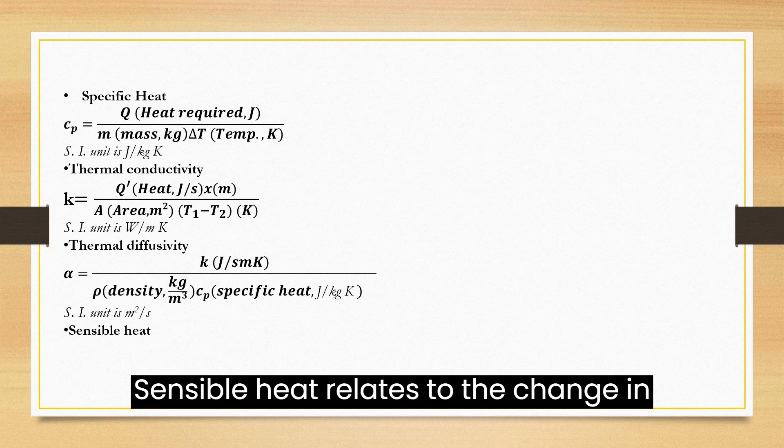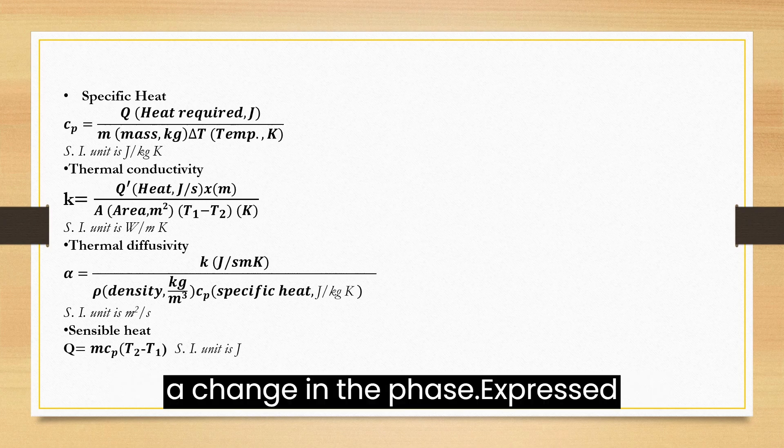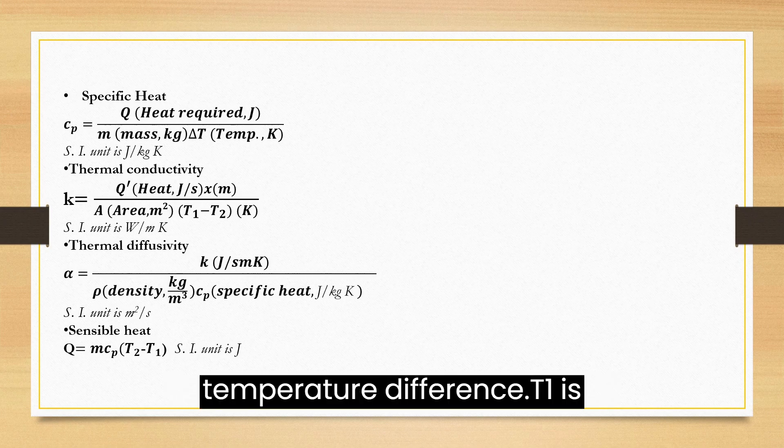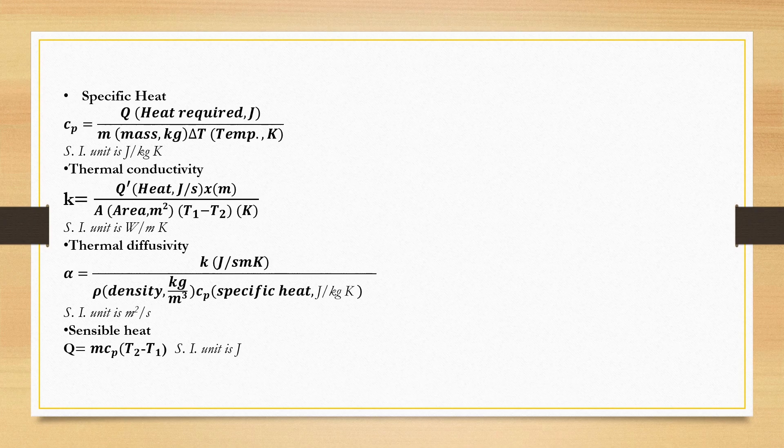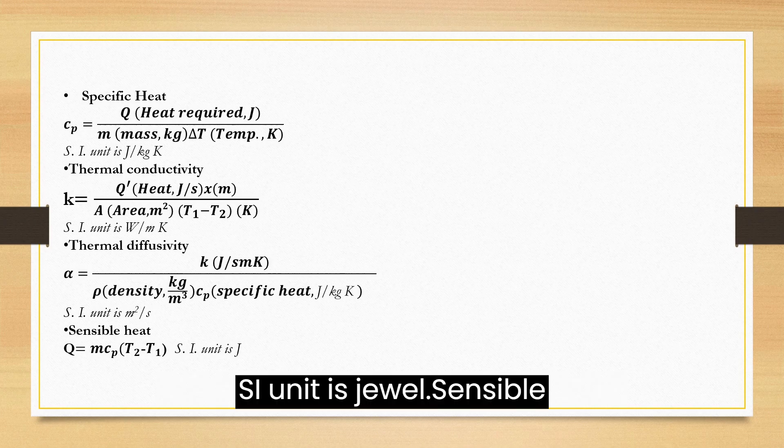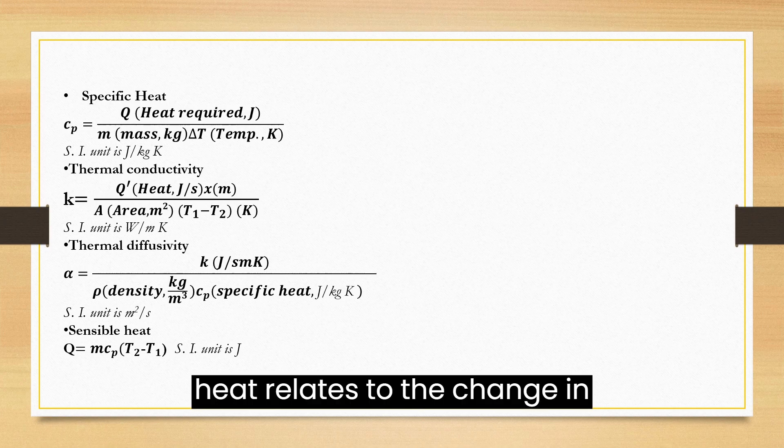Sensible heat relates to the change in temperature of an object or gas without a change in phase. It is expressed as mass times specific heat times temperature difference, where T1 is initial and T2 is final temperature. The SI unit is Joule.